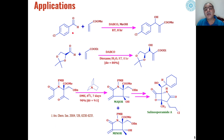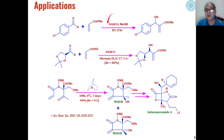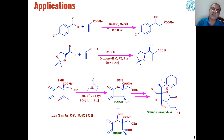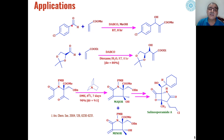A few more examples: para-chlorobenzaldehyde on reaction with methyl acrylate in the presence of DABCO (1,4-diazabicyclo[2.2.2]octane) as a catalyst — this is a tertiary amine — leads to the formation of a new carbon-carbon bond between the alkene carbon and the carbonyl carbon, giving alpha-hydroxy alkenes as the product.